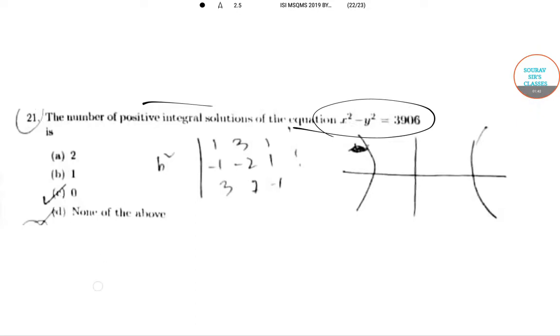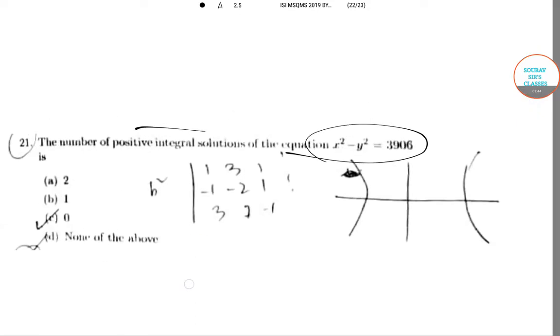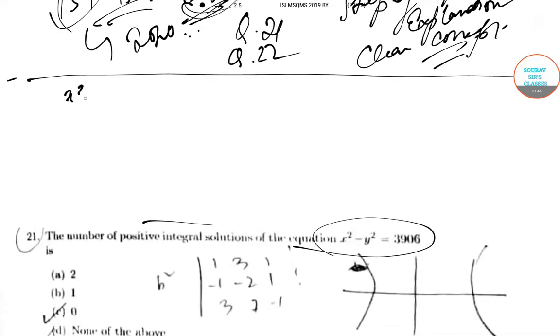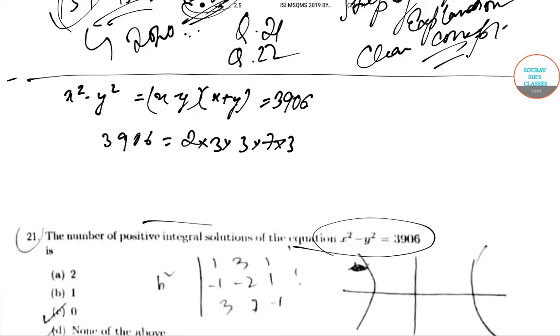X² - Y² = 3906 can be written as (X - Y)(X + Y) = 3906. Now 3906 can be written as 2 × 3 × 3 × 7 × 31. Now it can be proved that X - Y and X + Y are either both positive or both negative.